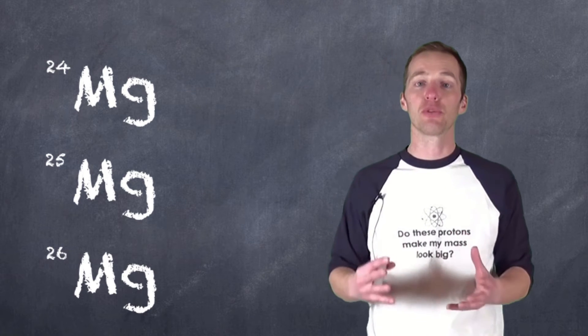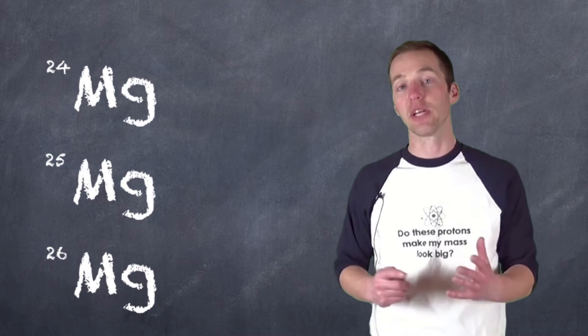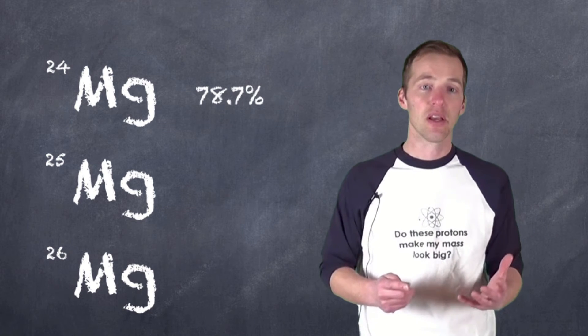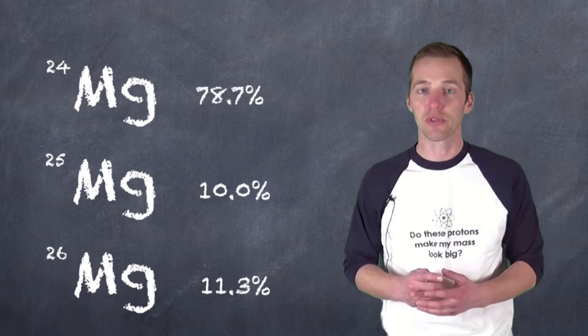Instead, magnesium-24 is the most common version of magnesium, the most commonly found isotope, at a percentage of 78.7%. Magnesium-25 is at 10%, and magnesium-26 is at 11.3%.